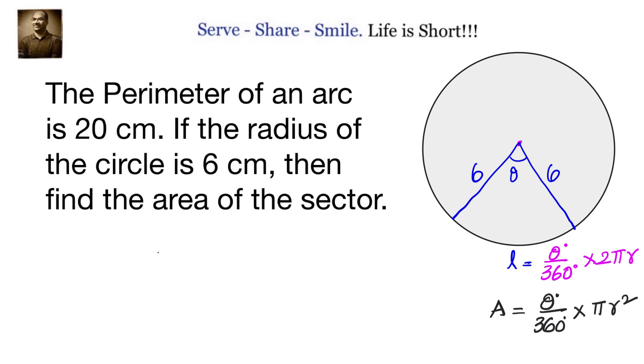Now first let us write down what is given to us. Given that the perimeter of an arc is 20 centimeter. So perimeter equals l plus 2r which equals l plus 2 times 6 which is l plus 12 equals 20, or l equals 20 minus 12 which equals 8 centimeter.